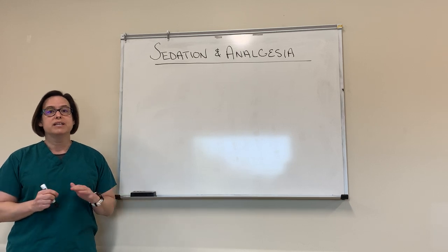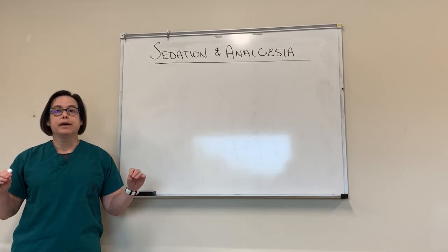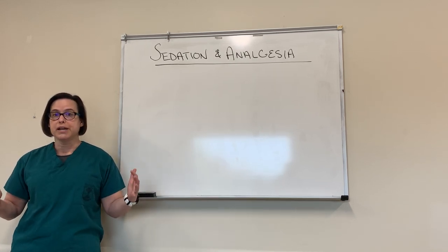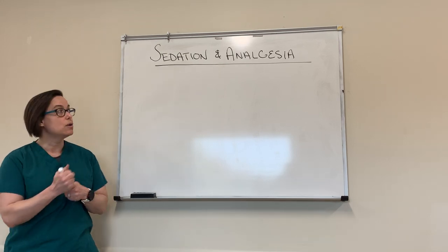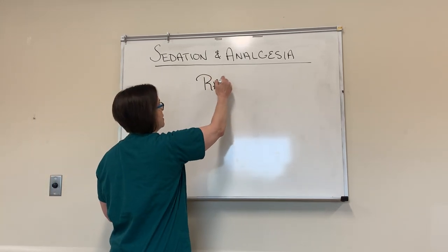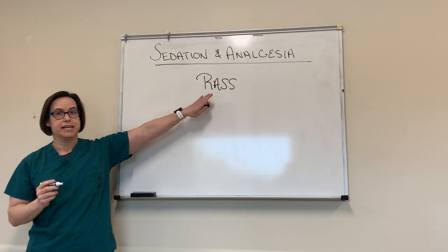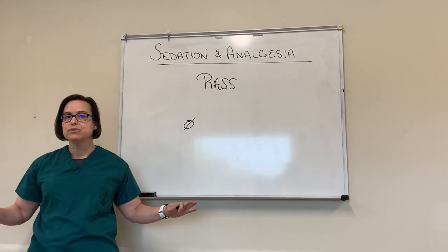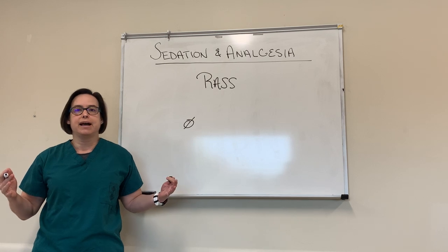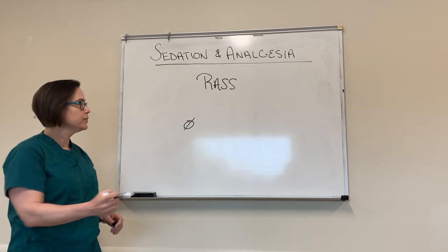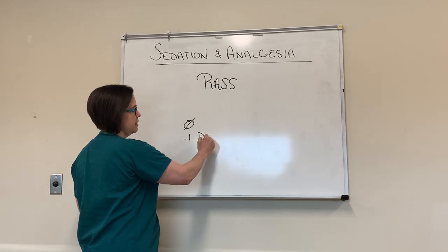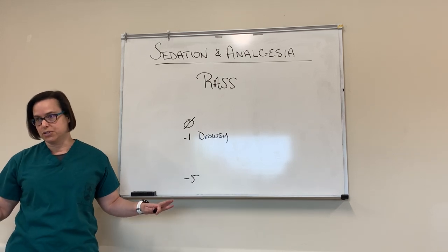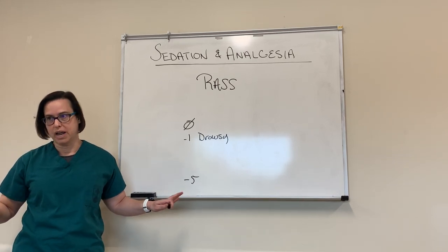The first thing I want to start with is whenever we have someone on pain medication or sedation medication in the intensive care unit, we want to use a goal to titrate that medication to. So what we usually use here is called a RASS — Richmond Agitation and Sedation Scale. It starts at zero. Zero is like hanging out, chilling, normal — just about falling asleep, just chilling in our lives normally. Negative one is a little bit drowsy. And then if we get to negative five, that's like you're out cold — you can't function, can't even rouse you if I try.